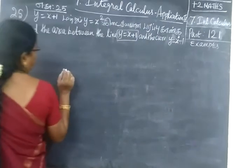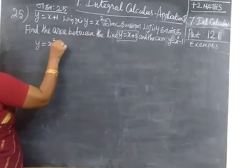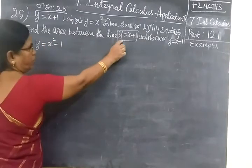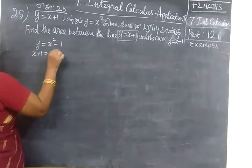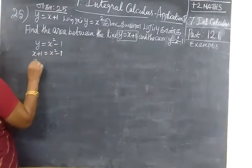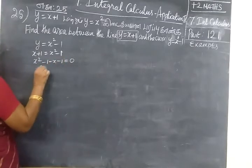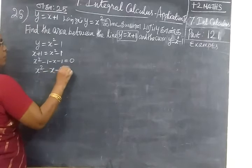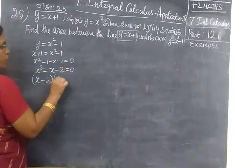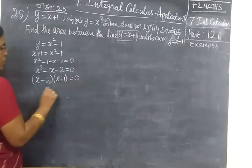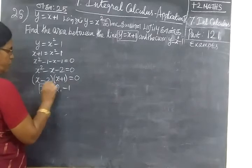For that, first we will have to find the point of intersection. So, y equal to x square minus 1; for y you are substituting x plus 1. So, x plus 1 equal to x square minus 1, so x square minus 1 minus x minus 1 equal to 0, so x square minus x minus 2 equal to 0, so (x minus 2)(x plus 1) equal to 0, which implies x equal to 2 and minus 1.